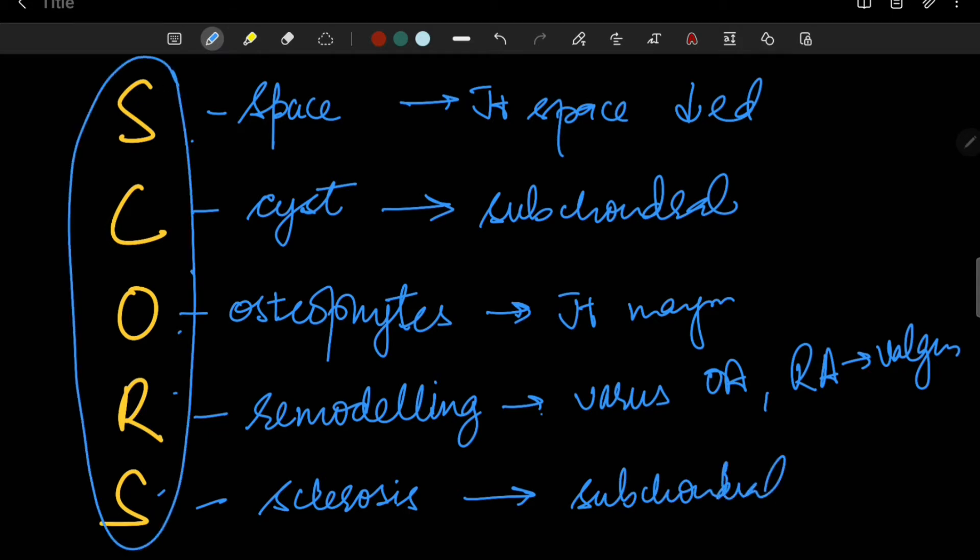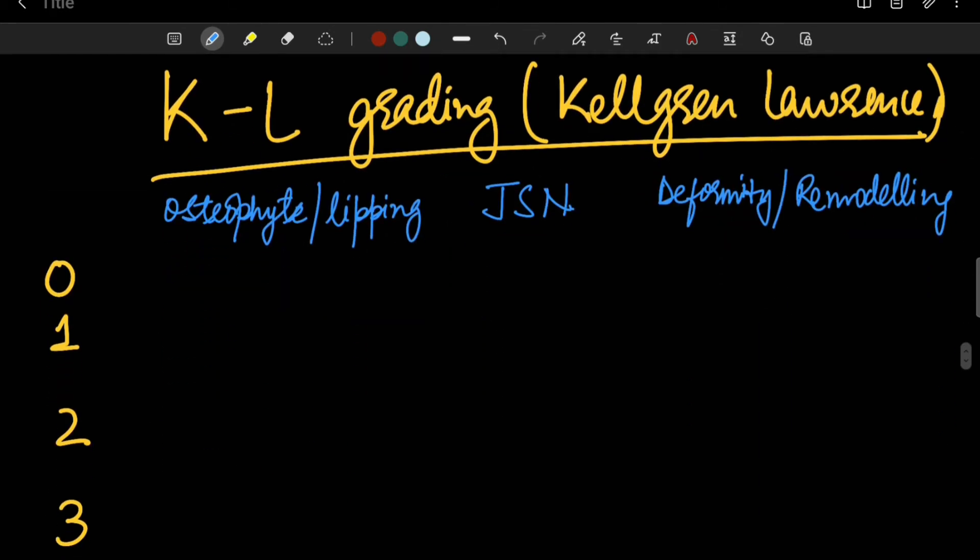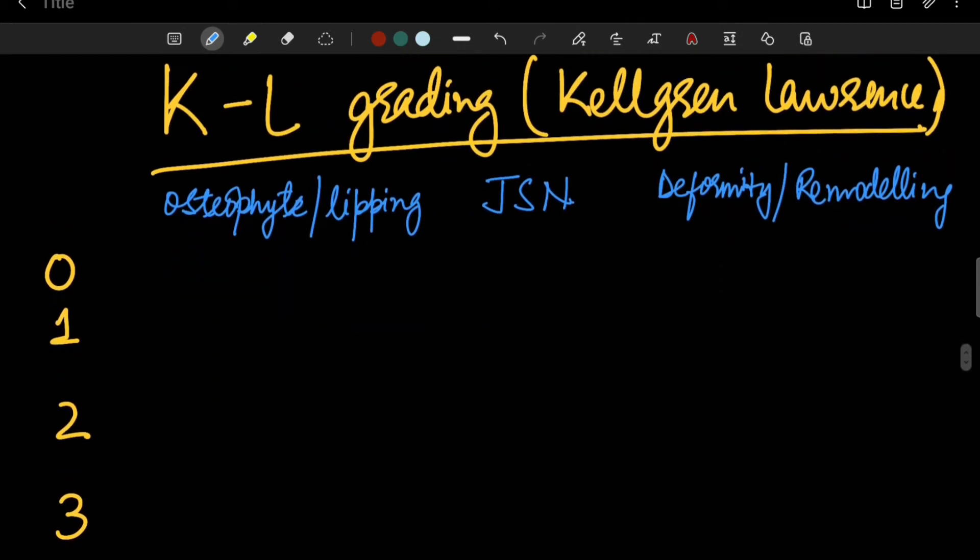The next section is the KL grading—the Kellgren Lawrence grading. This grading was initially given for various sites like the knee, the hip, the cervical spine, the lumbar spine, and the facet joints of the spine.